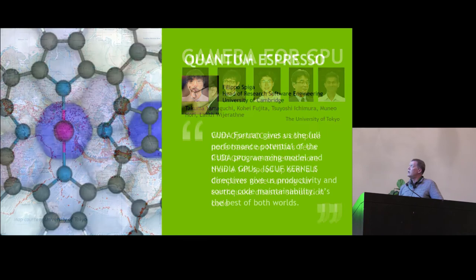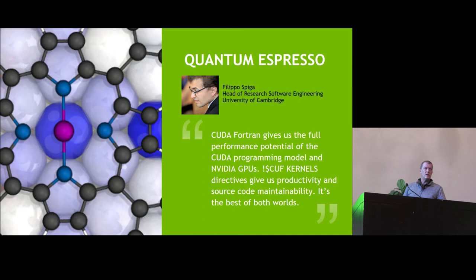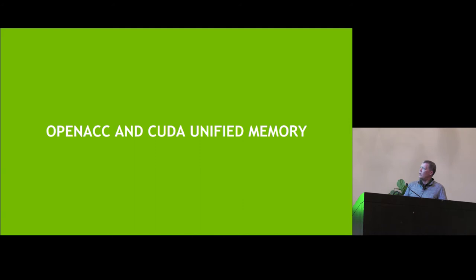Quantum Espresso is not an OpenACC success story but it is a directives success story. There is a version of Quantum Espresso now that is GPU-accelerated almost entirely with the cuff kernels directive, with really good speedups on the order of 4 to 5x for a single P100 over a dual-socket node. All of those ports have been done with user-managed data movement between host memory and device memory, and some of those are really large codes where the ports took a while.